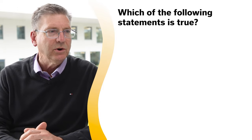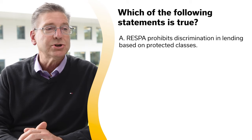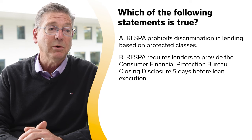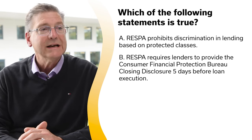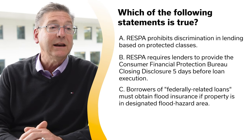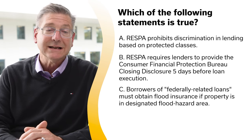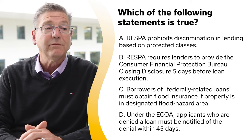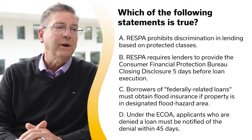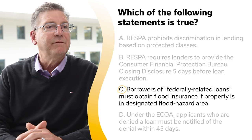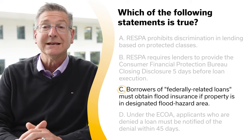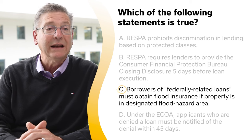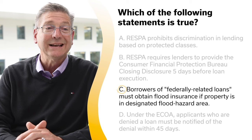Which of the following statements is true? A, RESPA prohibits discrimination in lending based on protected classes; B, RESPA requires lenders to provide the Consumer Financial Protection Bureau closing disclosure five days before loan execution; C, borrowers of federally related loans must obtain flood insurance if property is in a designated flood hazard area; or D, under the ECOA, applicants who are denied a loan must be notified of the denial within 45 days. The correct answer is C. The National Flood Insurance Act requires borrowers of federally related loans to obtain flood insurance if the property is located in a designated flood hazard area. Flood zone maps are available showing where flood hazard areas are located.